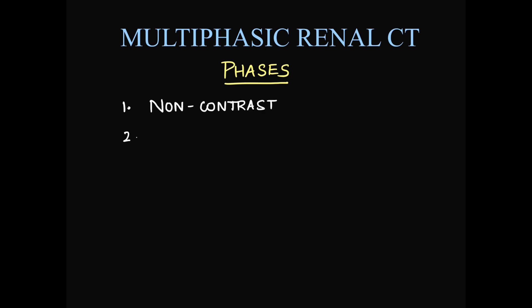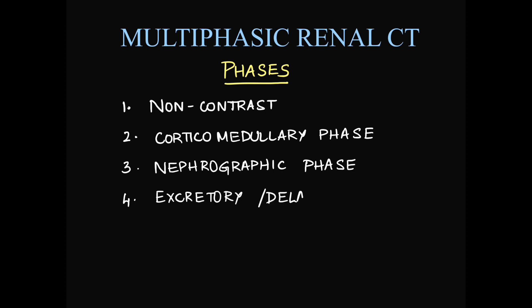First, conventionally we take a non-contrast CT of the KUB. Next, we have corticomedullary phase, the nephrographic phase and the last phase that is excretory or delayed phase. In these four phases, different structures will enhance.